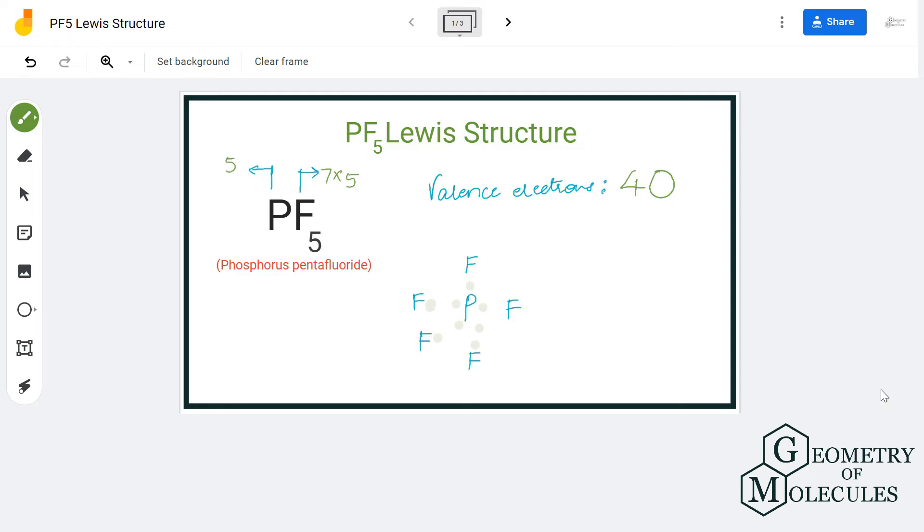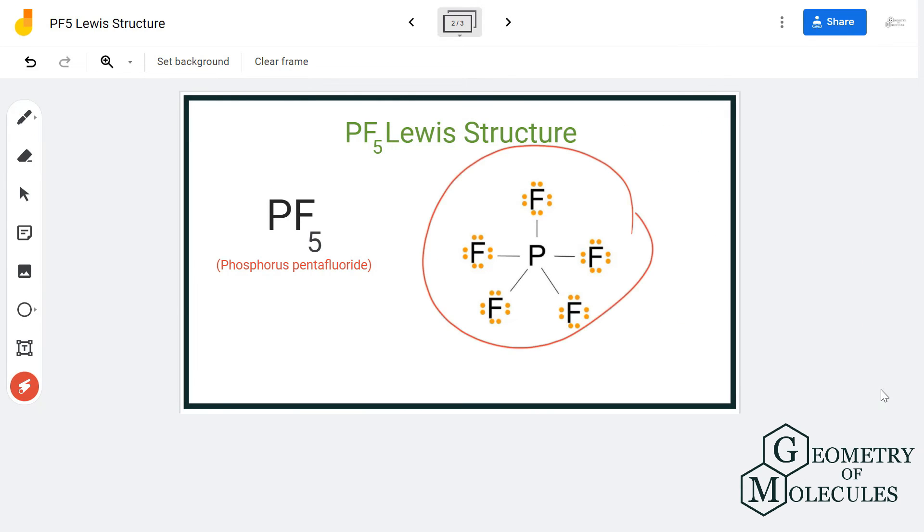Fluorine atom will share one valence electron of phosphorous atom to complete its octet. So all the five valence electrons of the phosphorus will be used up and the octets of all the fluorine atoms will be complete. And this is the Lewis structure for PF5, in which there are five single bonds between phosphorus atom and fluorine atom.